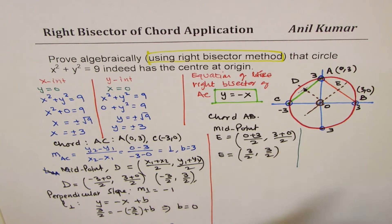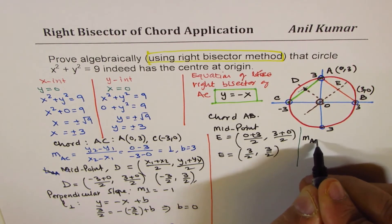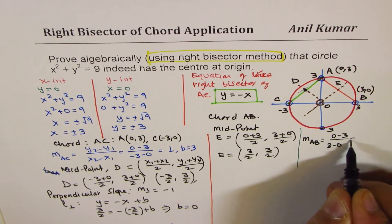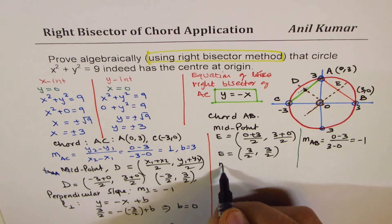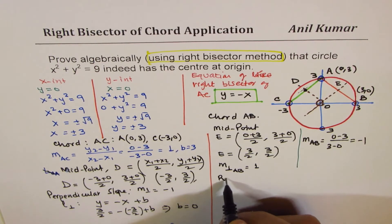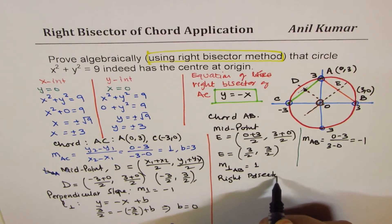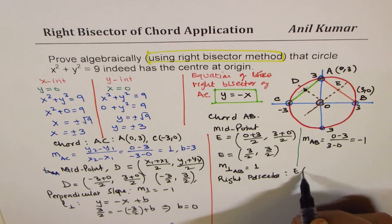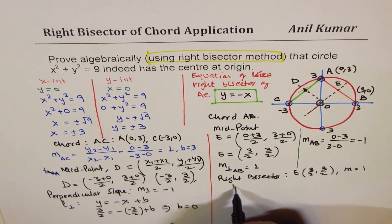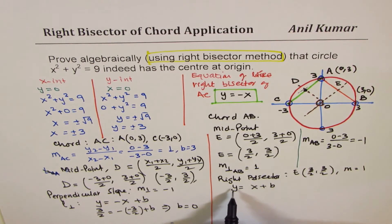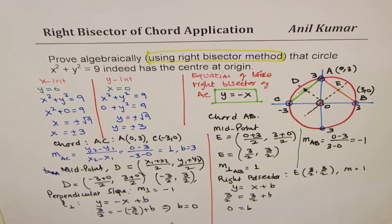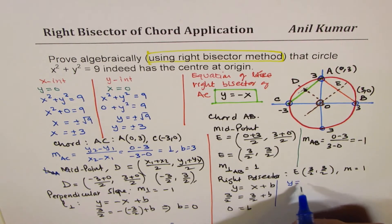The slope of AB is (0 − 3)/(3 − 0) = −1. Therefore, the slope of the line perpendicular to AB is +1. The right bisector equation is y = x + b. Replacing y with 3/2 and x with 3/2, we get b = 0. So the equation of the right bisector of AB is y = x.